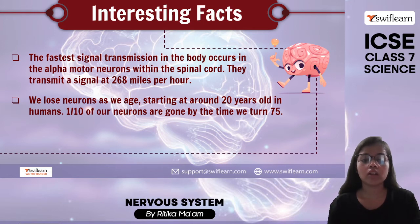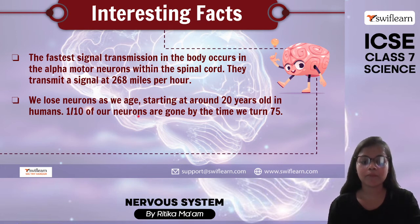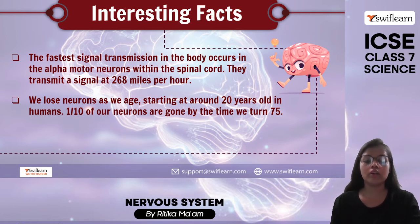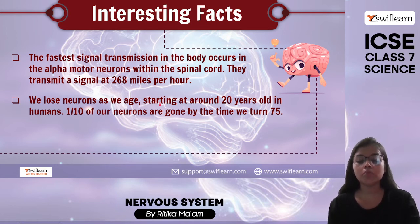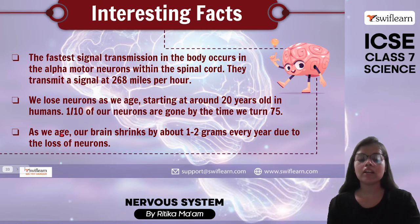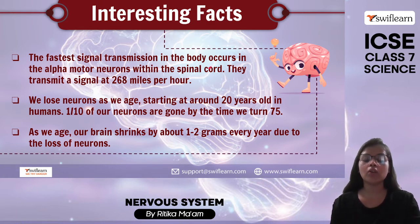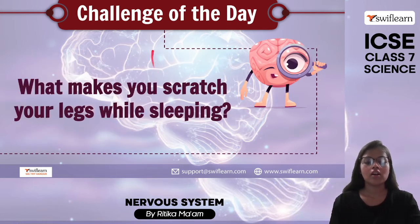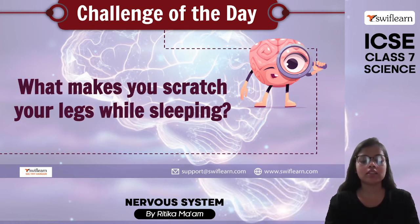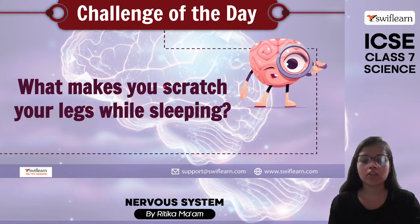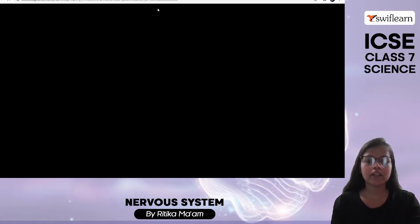An interesting fact: the fastest signal transmission in our body occurs in alpha motor neurons within the spinal cord, where signals are transmitted at the rate of 268 miles per hour. As we age, we start to lose our neurons — starting at around 20 years of age, one tenth of our neurons are gone by the time we are 75. As we lose neurons, the brain also shrinks by about one to two grams every year. Also, we stretch our legs while sleeping for improved flexibility and better circulation.